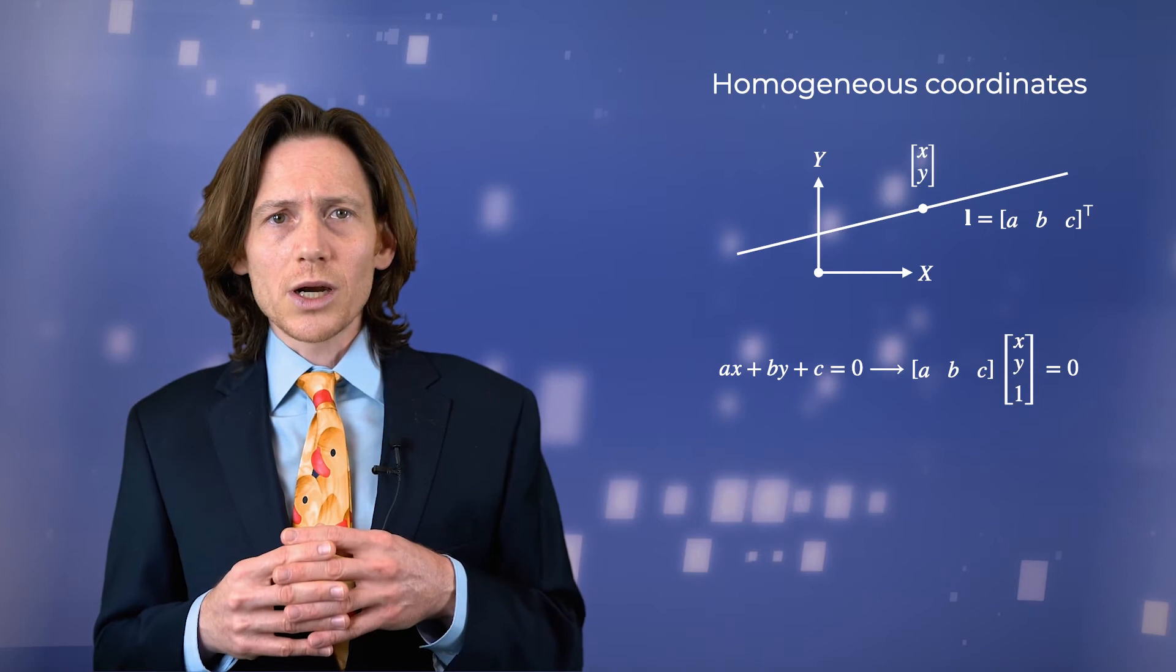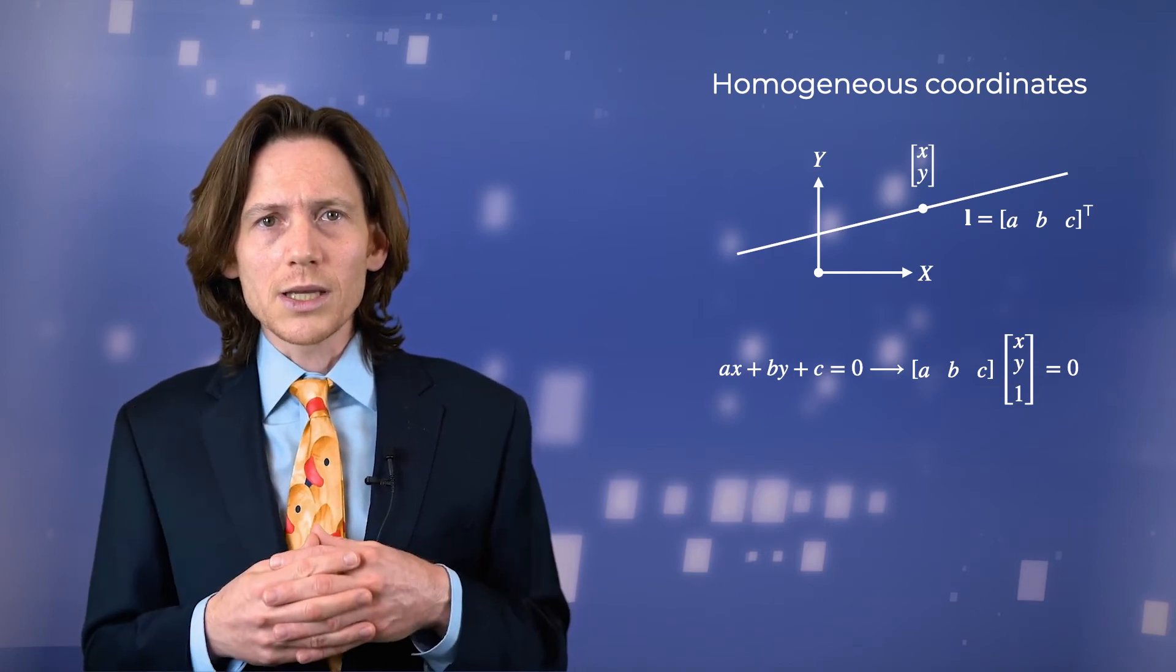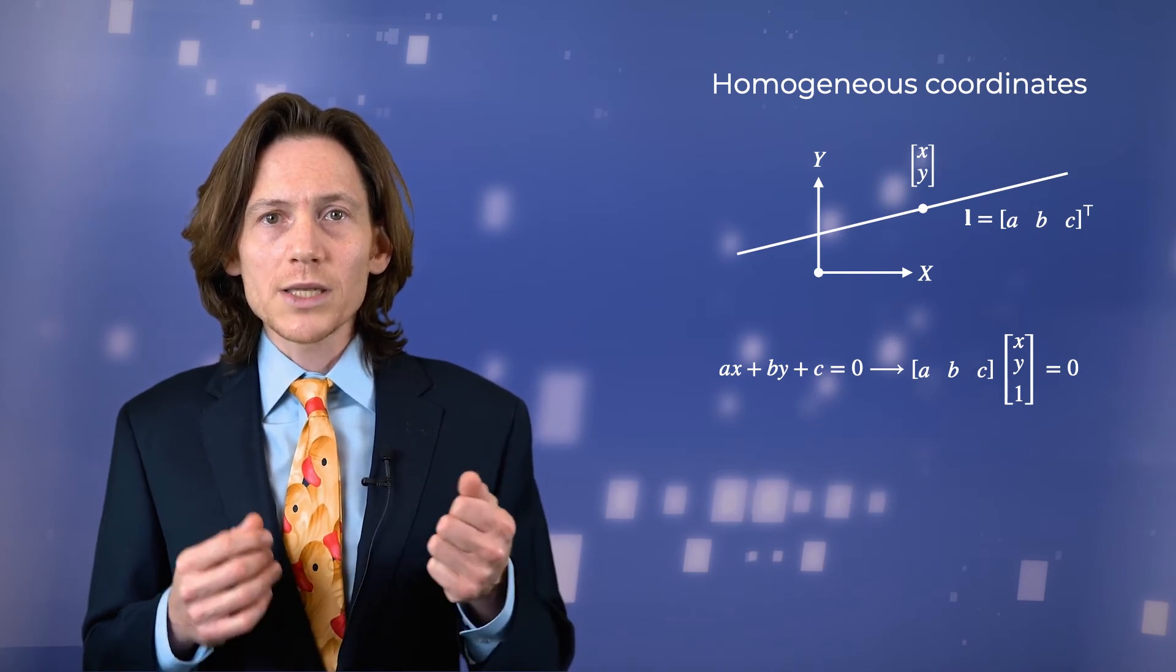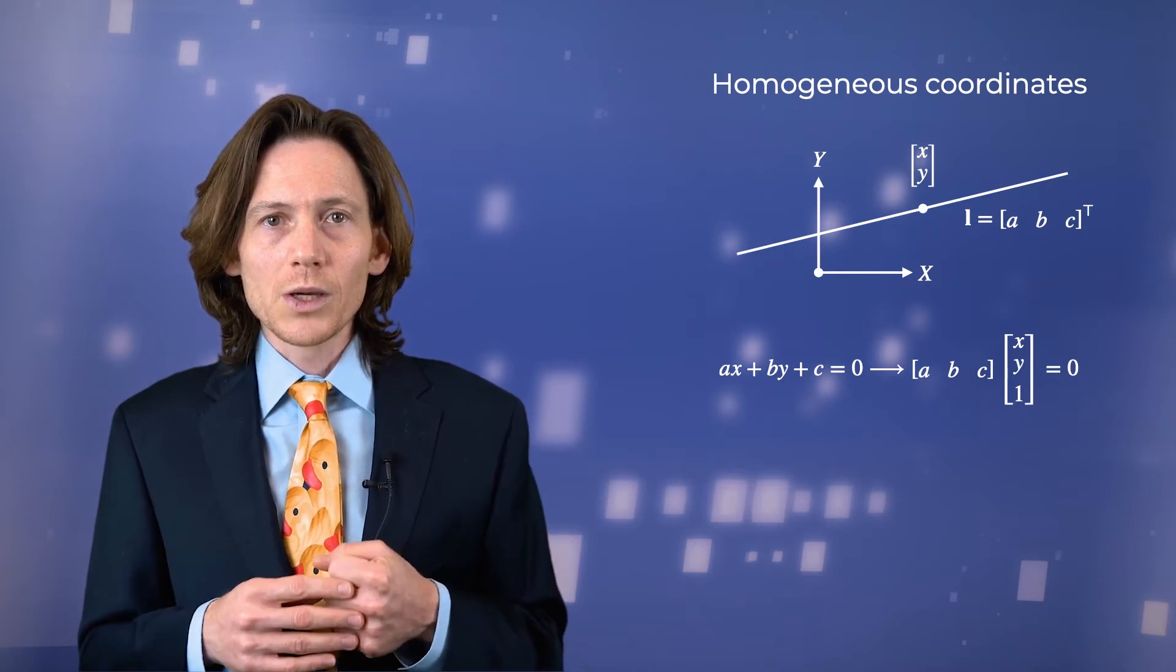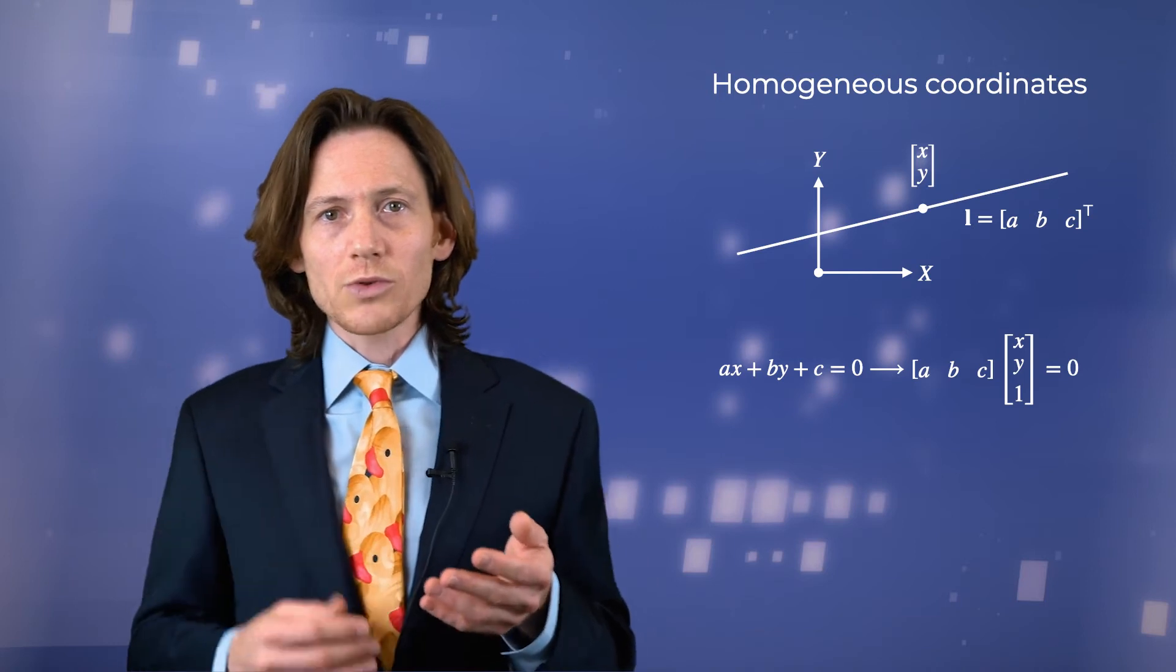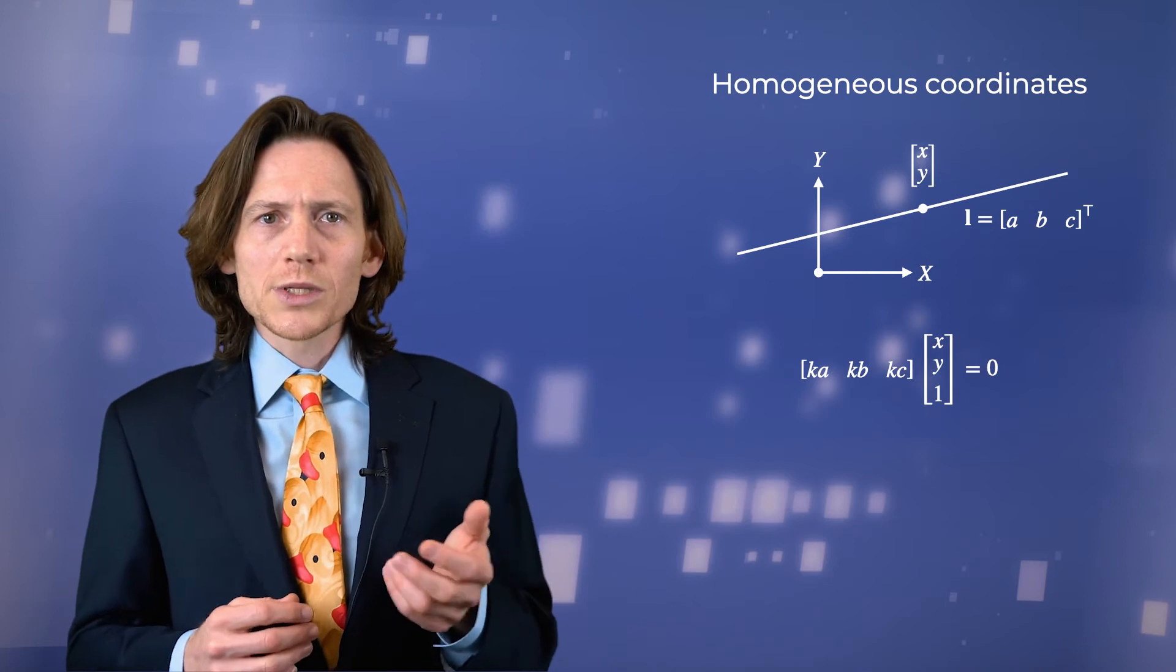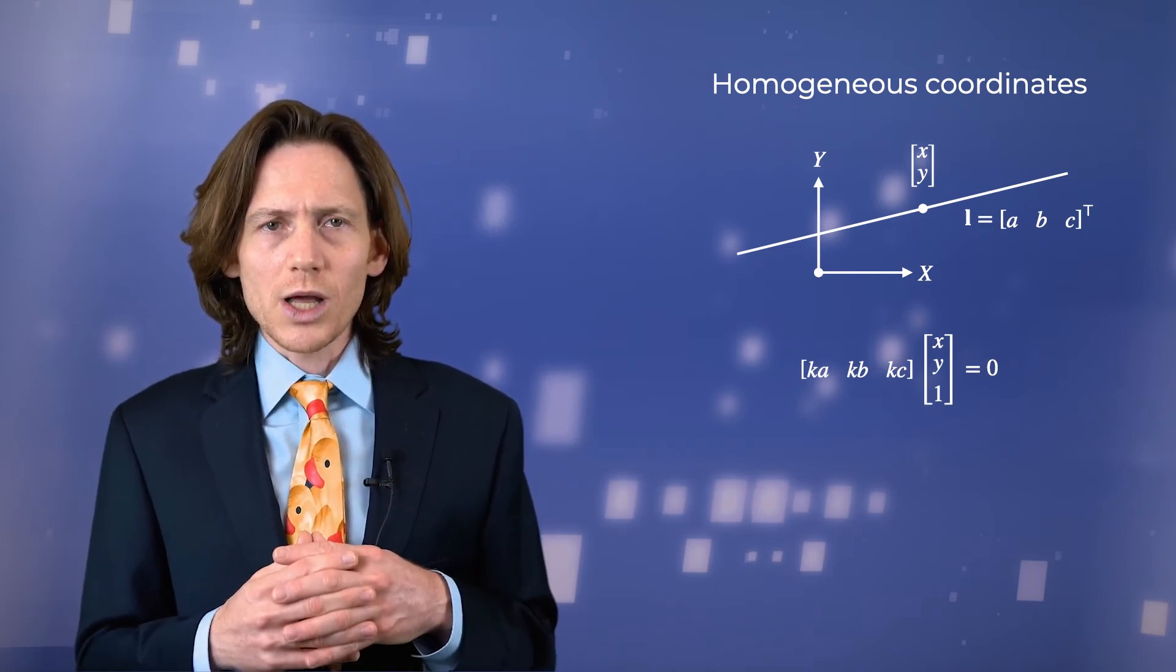Consider a line l in a two-dimensional Cartesian coordinate frame. The line is represented by three parameters a, b, and c that specify its slope and intercept. Any point (x, y) on the line must satisfy the equation a times x plus b times y plus c equals zero. We can multiply both sides by any non-zero constant k without changing the expression for the line.